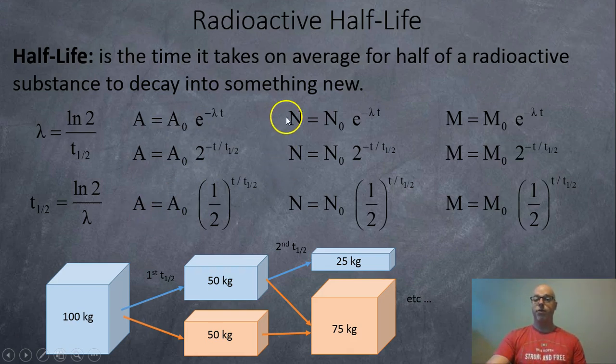So all three of these methods work. So A for activity and for the number of atoms, or M for the kilograms of the atoms or grams of the atoms.